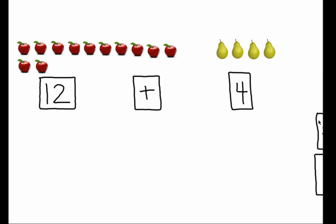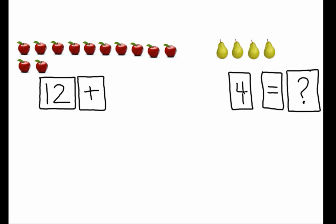Now I want to figure out the answer and I want to make a number sentence. So I'm going to use an equal sign and because I don't yet know the answer, I'm going to put a question mark. So now our number sentence becomes 12 plus 4 equals question mark. So this is our number sentence.